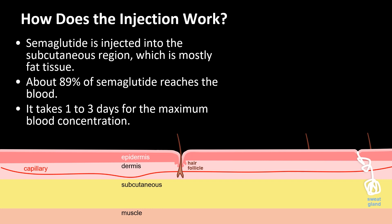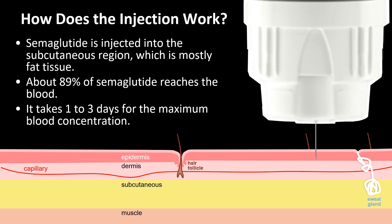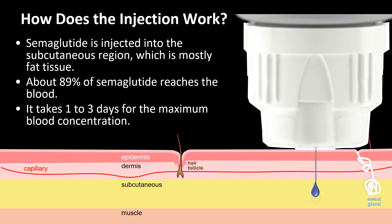So how does the injection work? Semaglutide is injected into the subcutaneous tissue, which is mostly fat tissue under the skin. The drug slowly diffuses into the capillaries in the dermis, which results in a one to three day delay before the maximum blood concentration is achieved. Just a helpful tip: it appears that some patients inadvertently leave the second cap on the Ozempic needle, which means the needle never enters the skin and the dose gets wasted. So please always look through the instructions that came in the box, because Ozempic, to my knowledge, is a little different from Wegovy — so whether or not you need to take off that second cap is going to vary.